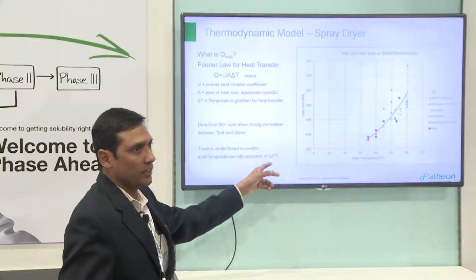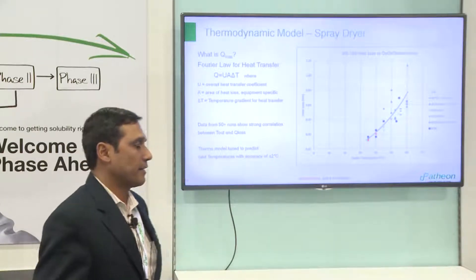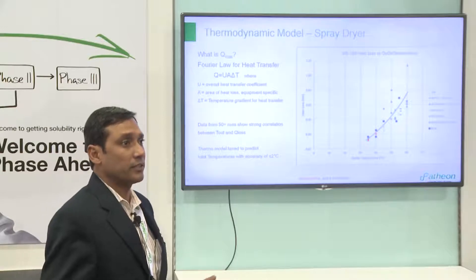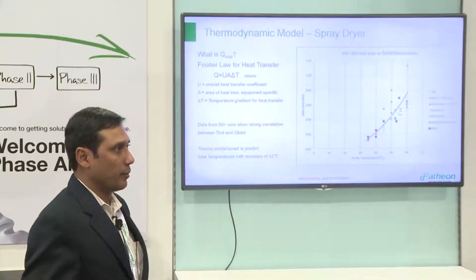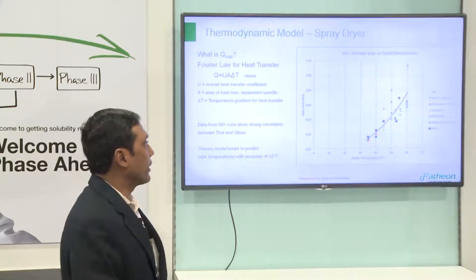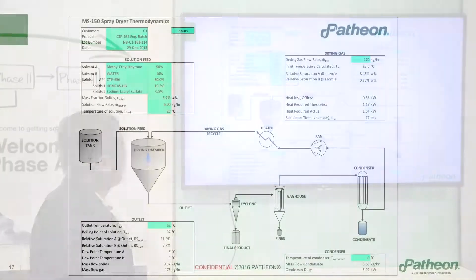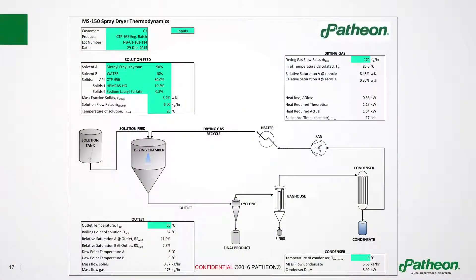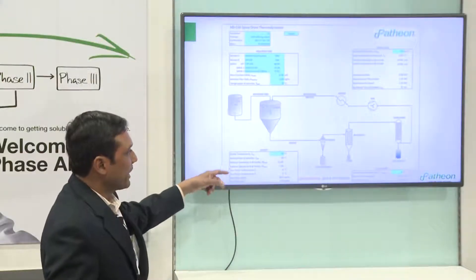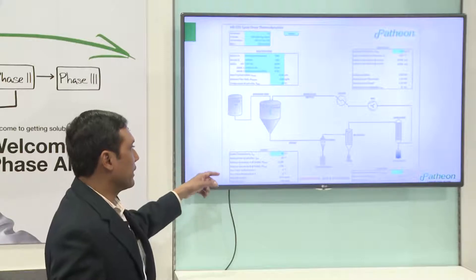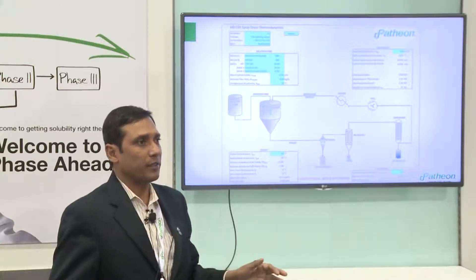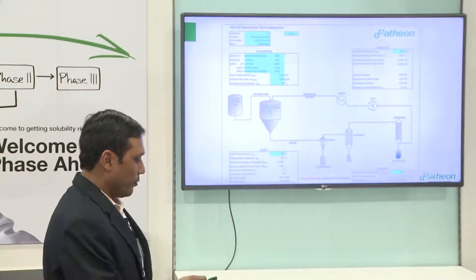Our model can now predict operating parameters within plus or minus two degrees Celsius, which is excellent. We don't need to do a lot of work to determine process conditions — we can target the desired process conditions for obtaining a dry product. This is what the model interface looks like: operators and engineers input the solvent system, solids content, desired target flow rate, drying gas parameters, relative saturation at inlet and outlet, and condenser settings — and you can model the system.